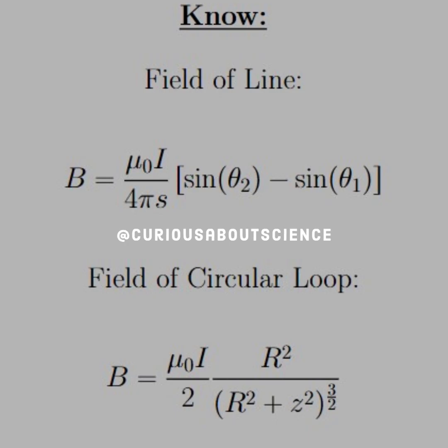Things that we should know for this question: From the text, the field of a line segment is B equal mu-naught I over 4 pi S. Now, mu-naught here is the permittivity of free space, which is made to cancel the units appropriately. Times sine theta 2 minus sine theta 1.